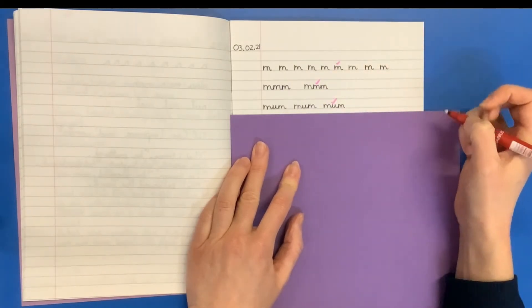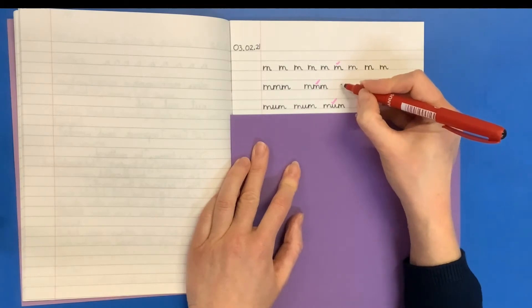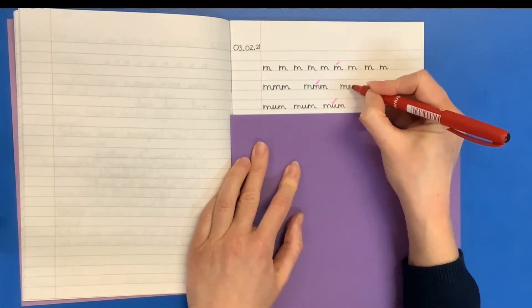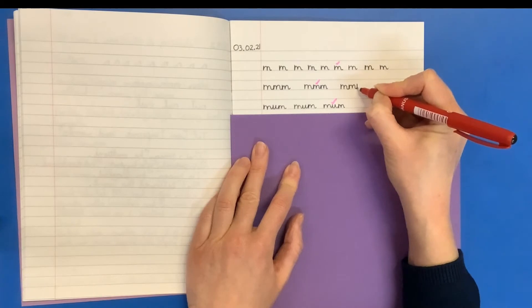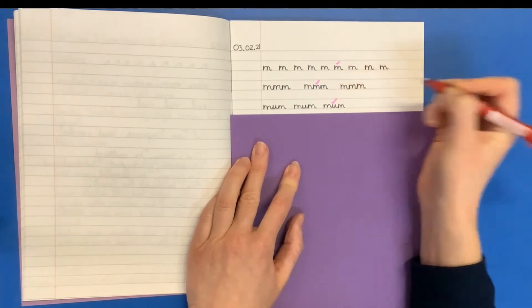Next step is to join three M's together. So I'll show you how I do that. From the bottom of the M, straight up, straight down, up and over, up and over, out. Straight up, straight down, up and over, up and over, and out.